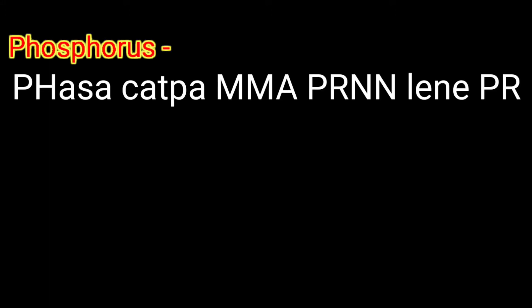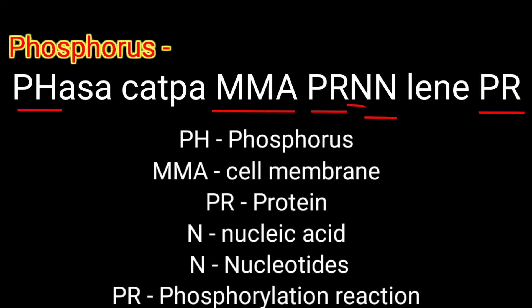Second, phosphorus. Phosphorus is a constituent of cell membranes, certain proteins, all nucleic acids and nucleotides, and is required for all phosphorylation reactions. Our trick is: 'Fasa katappa mama praan lene pera.' In Fasa, PH denotes phosphorus. In mama, M-M-A denotes cell membrane. In praan, PR denotes protein, N denotes nucleic acid, and the other N denotes nucleotide. In the last part, PR denotes phosphorylation reaction.